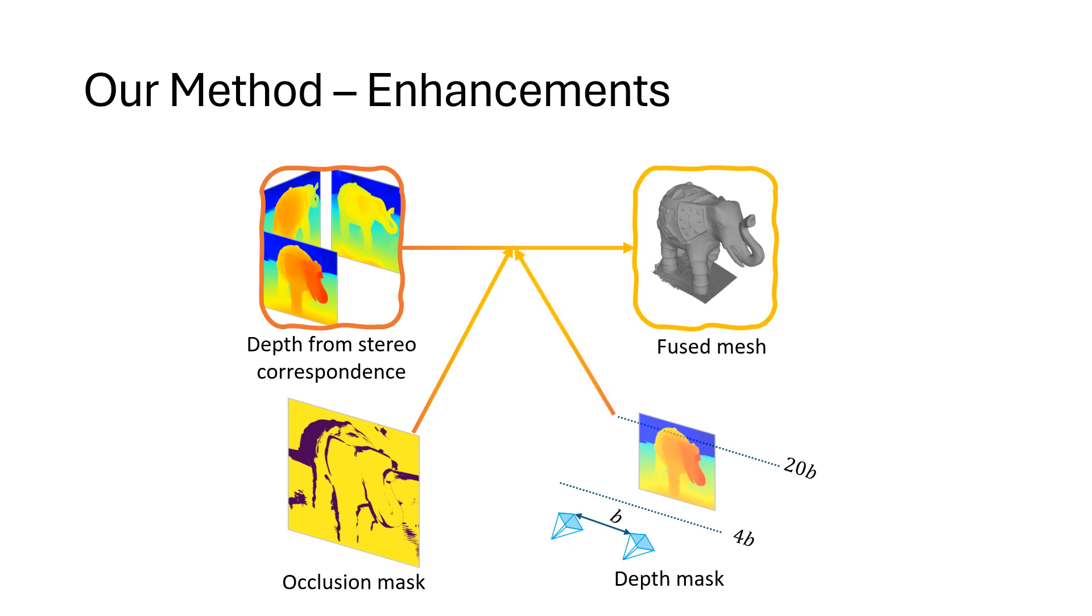These two masks, the occlusion mask and the depth mask, allow us to consider only areas where the stereo model is more confident in its inference.